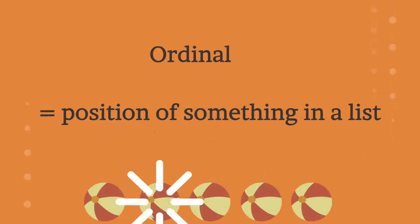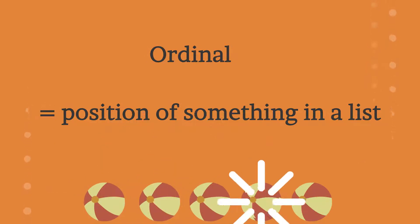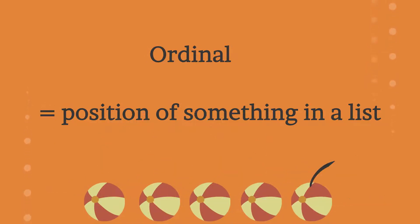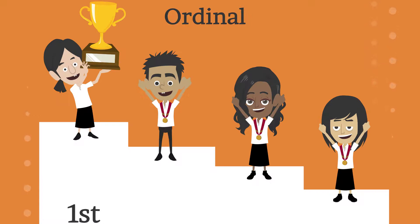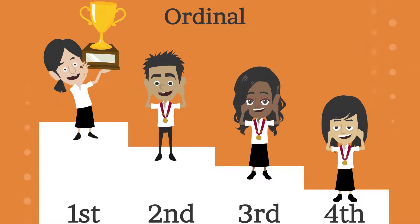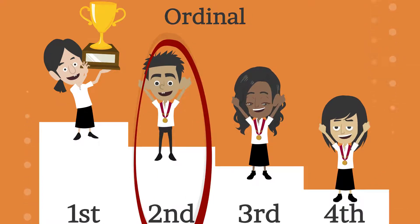While ordinal numbers tell us the position of something in a list. For example, in this picture, the boy got the second place.